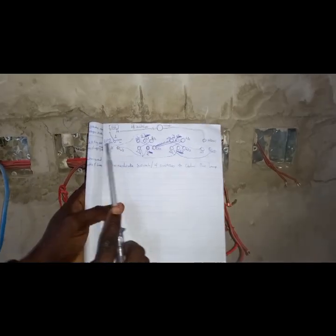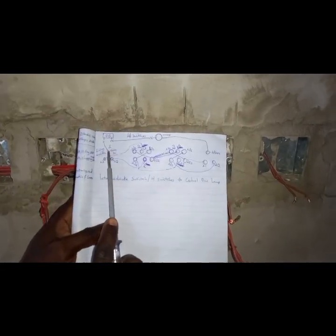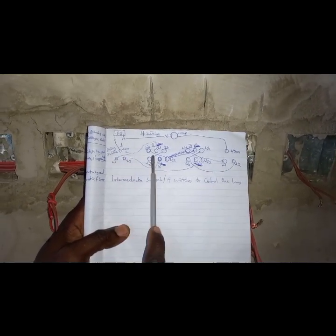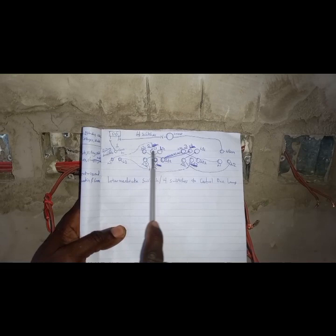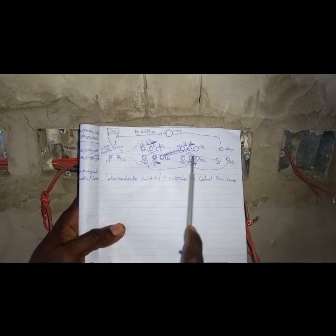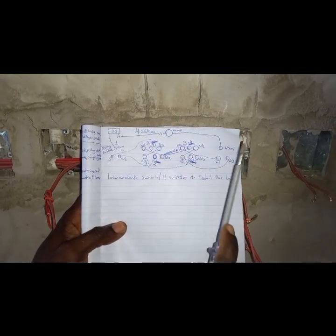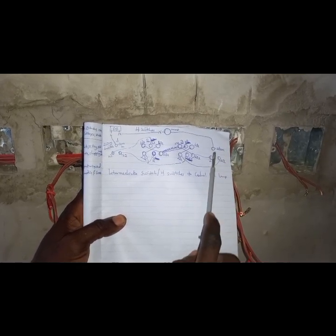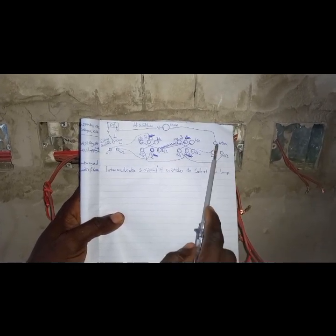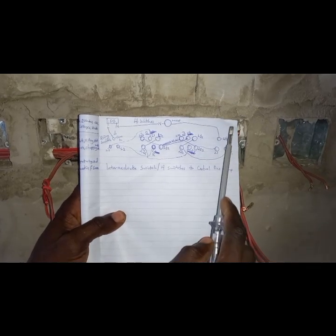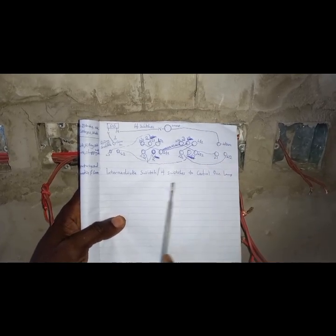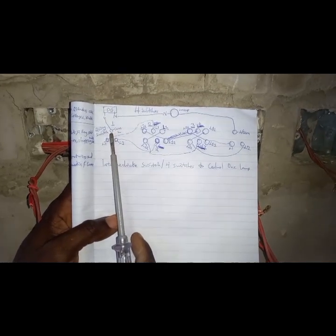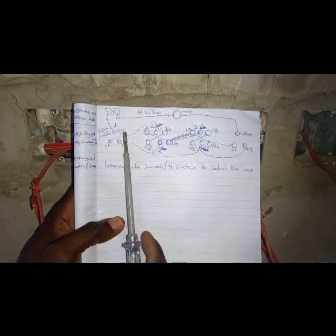Here we have a two-way switch, then an intermediate switch, then another intermediate switch, and the final switch is also a two-way switch. Another name for a two-way switch is a one-gang two-way switch. On the one-gang two-way, these are the terminals you will find.